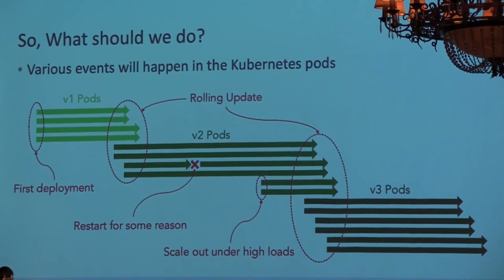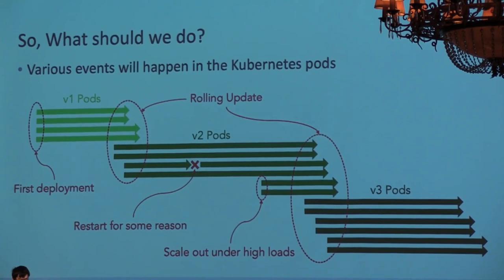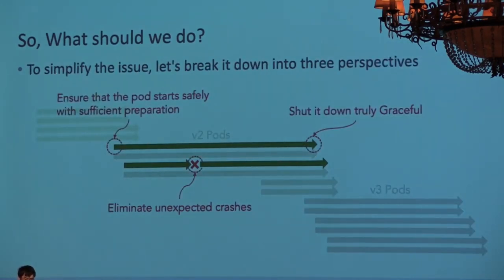When we update the deployment resource, the pods are replaced with new ones by rolling updates. The new version of the pods is newly launched and the old ones are terminated. Running pods may stop unexpectedly, and a new one will be deployed. You may want to add more pods if the load grows, which again causes pods to start and stop.